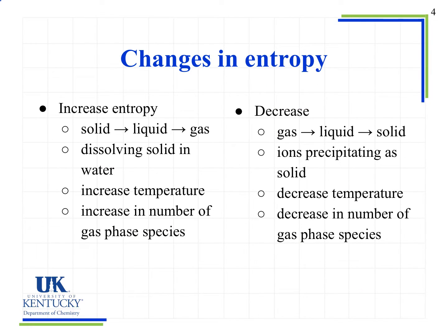Let's look at some characteristic features of when we see increases and decreases in entropy. When we increase entropy, we are increasing the disorder of the system. We typically see this in phases when we go from solid to liquid to gas. In a solid, molecules are ordered and arranged very specifically. As we go to a liquid, the molecules can move around more and there's less order. When we go to a gas, we see much more disorder because the molecules have no specific set arrangement.